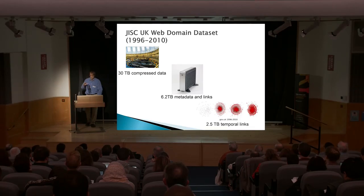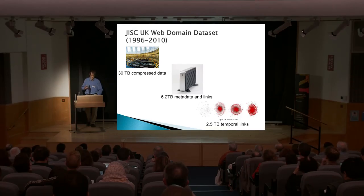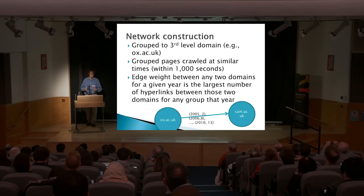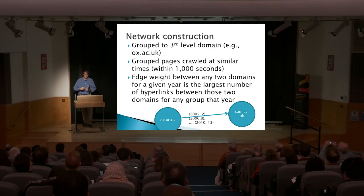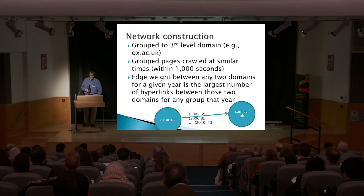We looked at a number of contexts, but on the academic side we grouped them together in the host graph on a yearly basis — so we could say Oxford linked to Cambridge X number of times in each year. And then we looked to compare this to a number of different proxies.